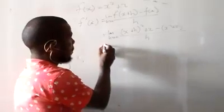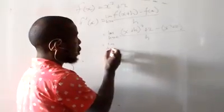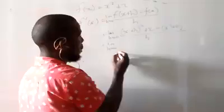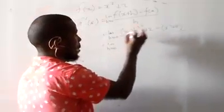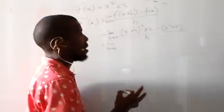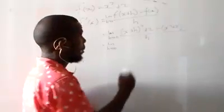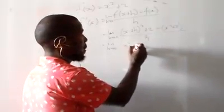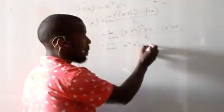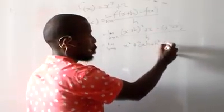Take note. Now, going down, lim h→0. This one, we are going to break it. The bracket is going to break because it's raised to the power of 2. It means the bracket multiplies itself by itself. So you have x² + 2xh + h² + 2.